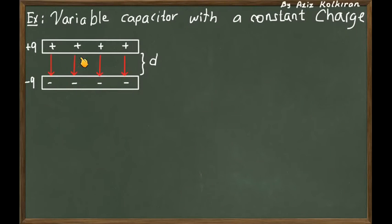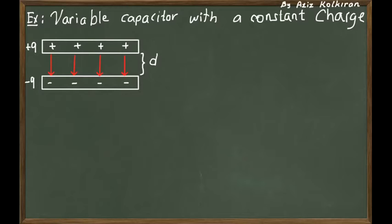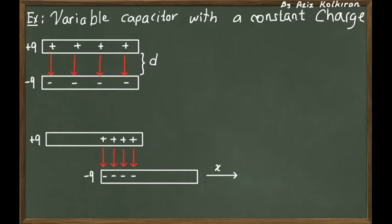Let's think of a capacitor which is initially charged and there is no connection to anywhere. Suppose we have plus Q charge on the upper plate and minus Q charge on the lower plate. What we do is interesting: we keep the distance D fixed, but the lower plate is moved horizontally.